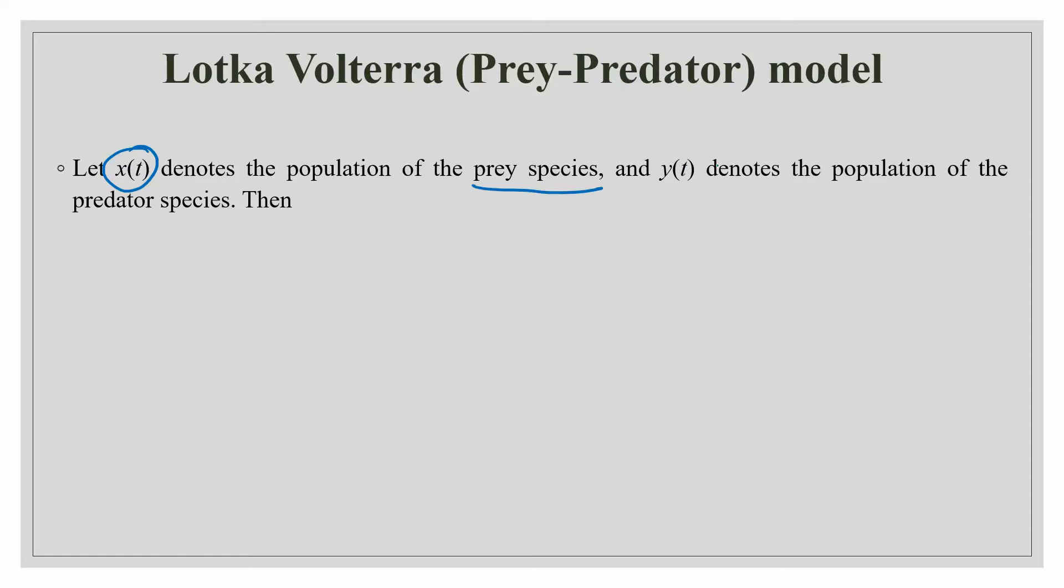Lotka Volterra gave the first prey-predator model. They considered a prey species, let it be denoted by Xt and then they also considered a predator species, let it be denoted by Yt. So they developed the basic model.